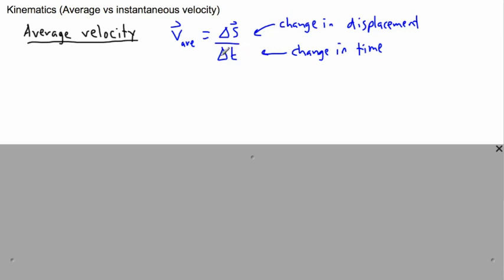Note that time doesn't get an arrow because it's a scalar — there's no sense giving it a direction. So that's all there is to average velocity.